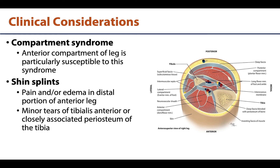Let's discuss a few additional clinical considerations. Compartment syndrome occurs when increased volume in a compartment — caused by infection, hematoma, or a variety of other issues — is unable to move out due to a relatively unyielding deep fascia, leading to increased compartmental pressure. The anterior compartment of the leg is typically named as the most common compartment for this to occur.